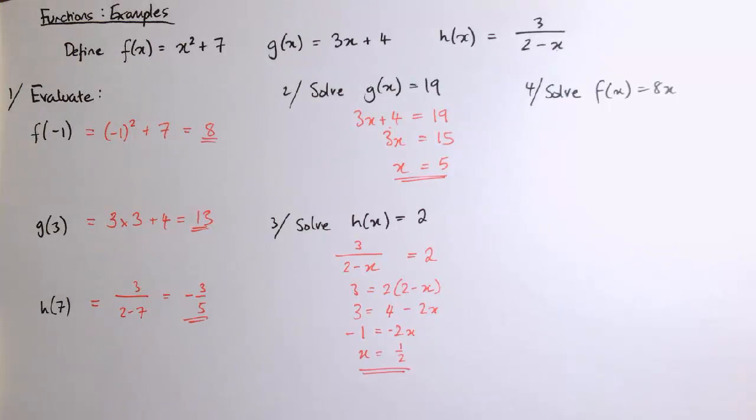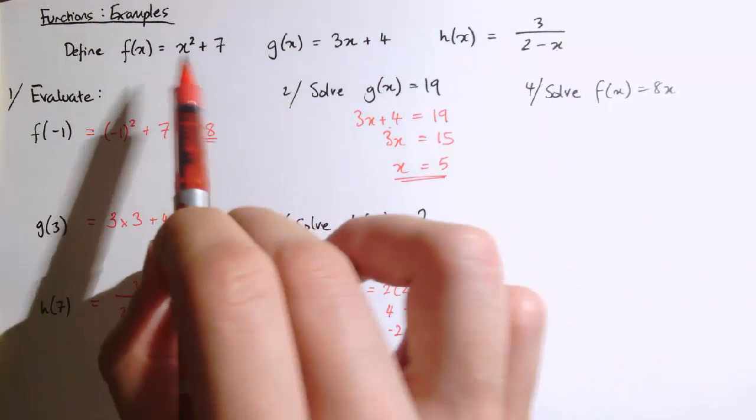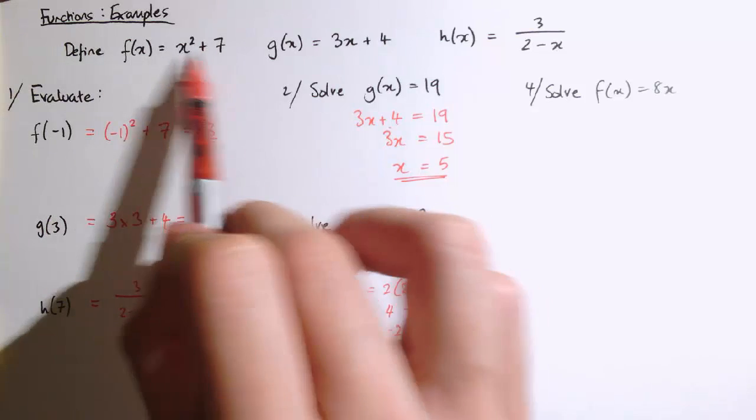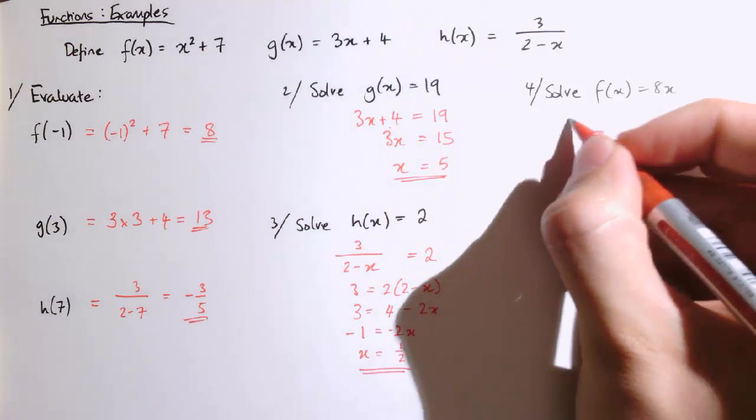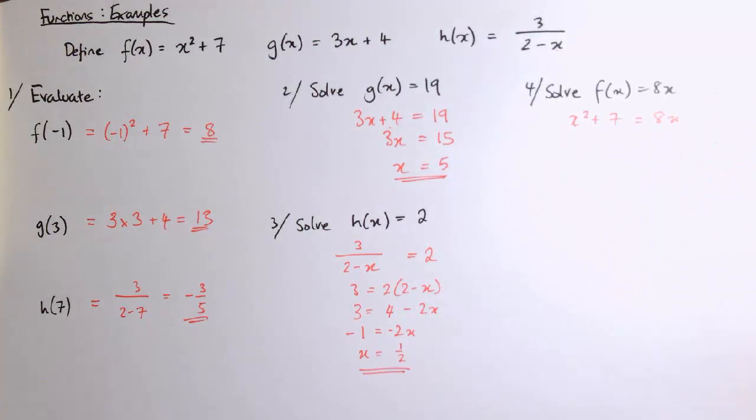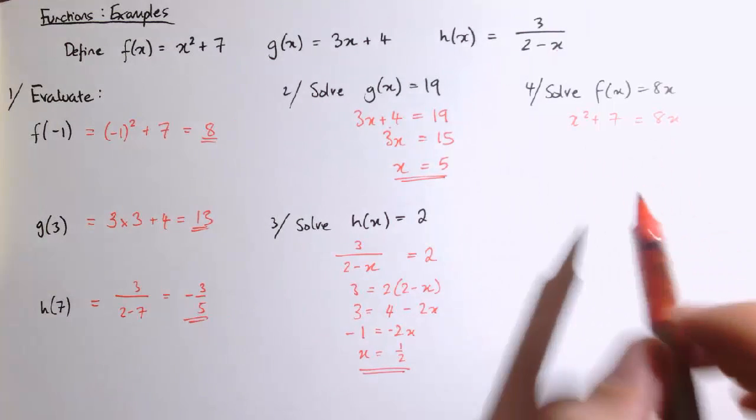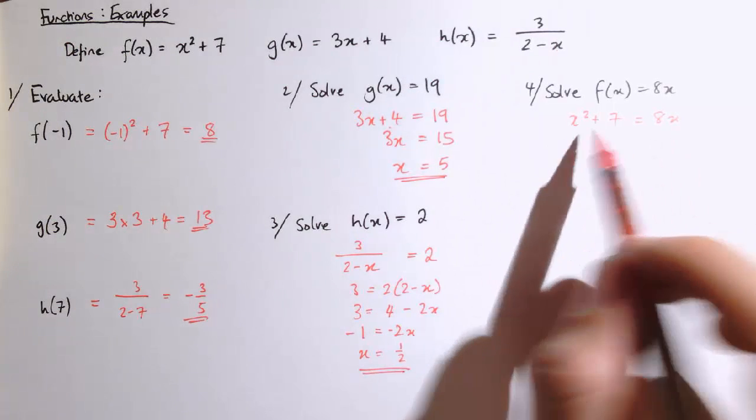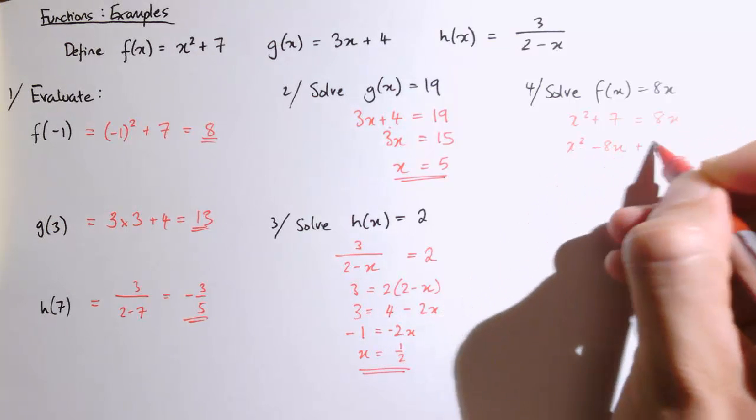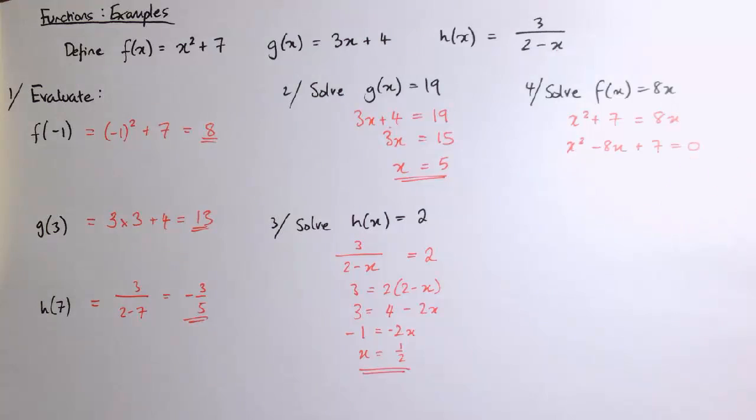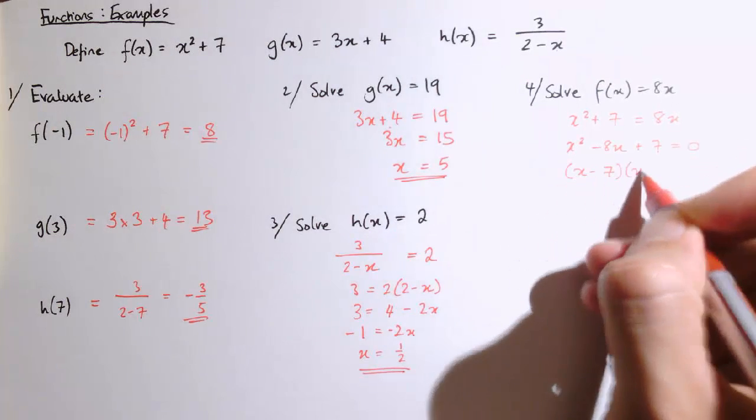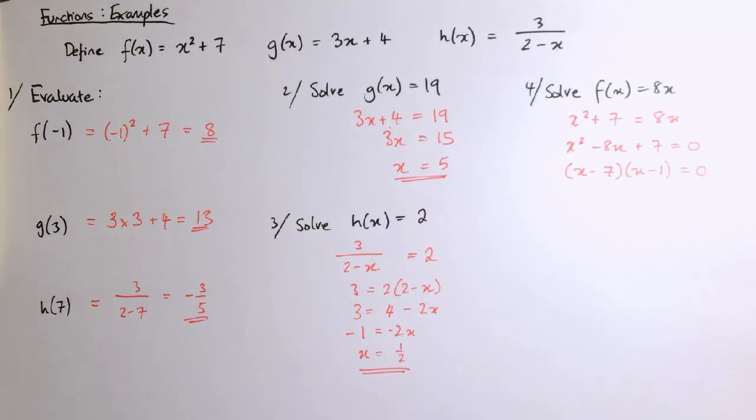We're going to solve this in exactly the same way. The input here, x, gives an output of x squared plus 7. So f of x is x squared plus 7. So we can say x squared plus 7 equals 8x. And now we just need to solve this equation. We can see this is a quadratic equation in x. So I'm going to subtract 8x from both sides to make it all equal to 0. And I can see that this one factorizes as x minus 7 times x minus 1 equals 0.